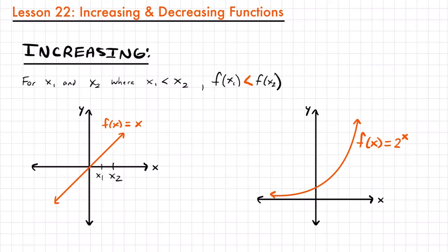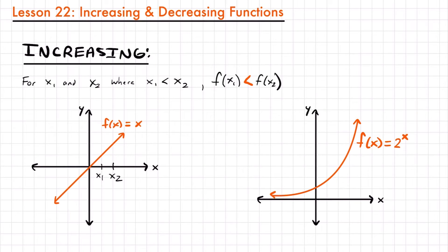We've verified that both of these functions are increasing. From an algebra perspective we looked at x values and their y values, but now we can describe this from a calculus perspective. If you look at the slope of these functions, the slope is positive in both cases. If we took the derivative of x, it would equal 1, which is a positive value. So for an increasing function, the slope or the first derivative is going to be positive.